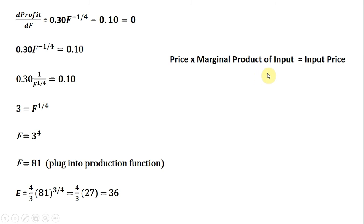Before I go, I want to show you that the first-order condition gives us this notion: the optimal use of an input is given by Price × Marginal Product of Input = Input Price. You see that right here: 0.30 is the price of eggs, F^(-1/4) is the marginal product of the input,